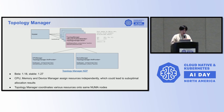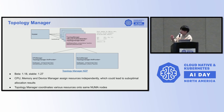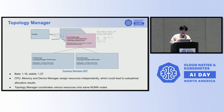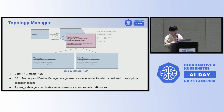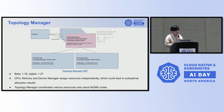Let's talk about the topology manager in Kubernetes. This feature became beta in Kubernetes 1.18 and reached stable at 1.27. Without the topology manager, the CPU manager, memory manager, and device manager assign resources independently, which would lead to suboptimal allocation results. The topology manager is designed to coordinate various resources onto the same NUMA nodes. Specifically, during the get topology hint phase, the CPU manager, memory manager, and device manager report NUMA hints to the topology manager. Then the topology manager coordinates the hints and records the optimal result. In the allocation phase, these managers allocate resources based on this result, so the NUMA nodes can be aligned.